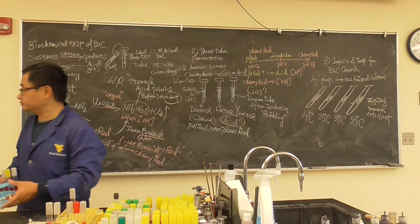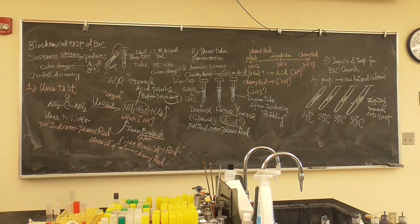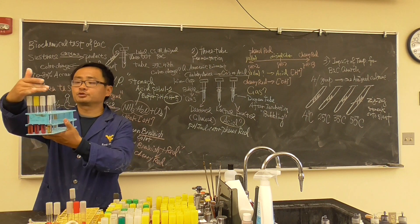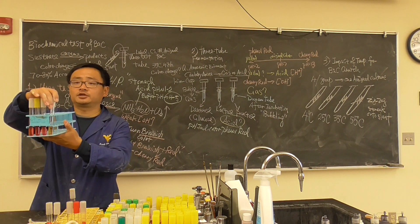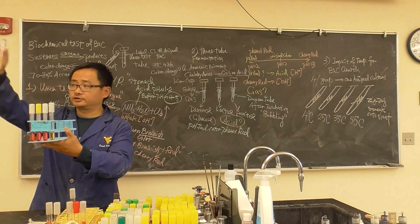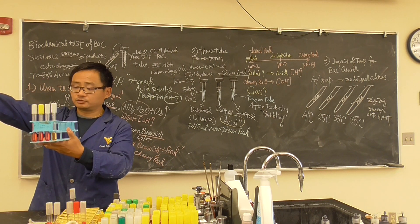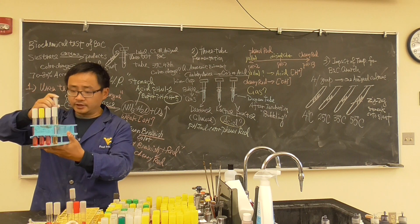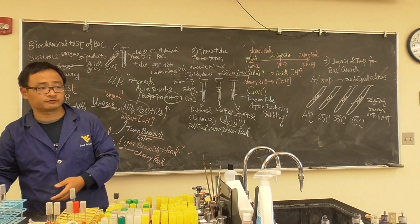Every individual student will get five items today: the three-tube fermentation test tubes, a urea test tube, and an additional slant for the temperature test. Let's talk about the temperature test first — it will be four students as a group.